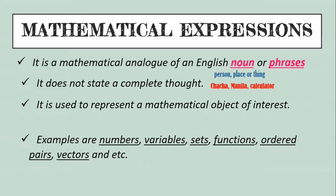For example, for the person — Cha-cha; place — Manila; or anything like a calculator, book, pencil. And when we say phrases, it is an incomplete thought. Same with the expression — it doesn't state a complete thought. And then it is used to represent the mathematical object of interest.